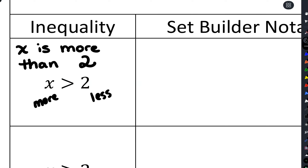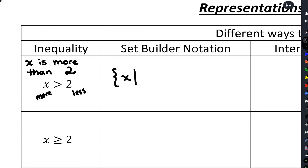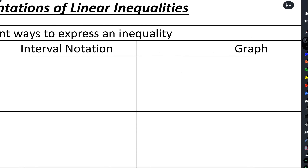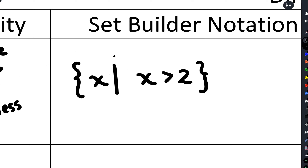With set builder notation we use these curly brackets and we're defining that for x, x is more than two. We're really just copying our inequality notation in this case. The tall line inside the brackets means 'is defined by.' So we have this variable x and it is defined as x is more than two.